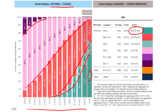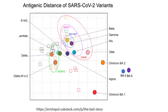I think what we need to do is look at the data and then make up our minds. The first question is how does BA.5 relate to the other Omicron subvariants we've seen already? To understand that, we look at this antigenic distance of the different SARS-CoV-2 variants. This graph is from Eric Topol's substack, and you can see in the middle the original SARS-CoV-2 virus isolated at the very beginning of the pandemic in 2019, known as 614G.